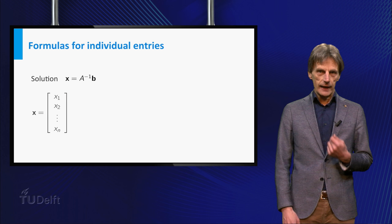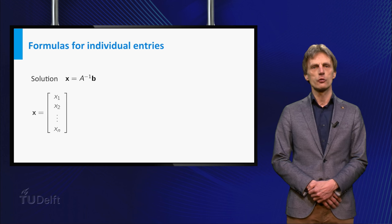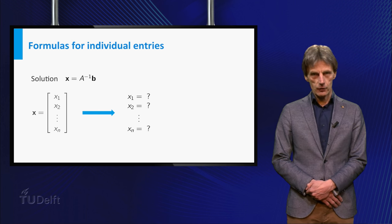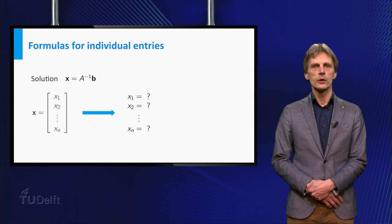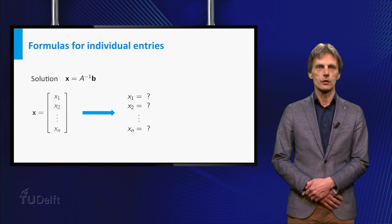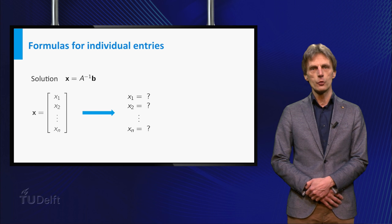The formula x is equal to the inverse of A times b is a closed formula for the solution x. Sometimes one is not interested in the entire solution x, but only in one or two of its entries. So it would be nice if we would have closed formulas for the individual entries x1 up to xn as well.